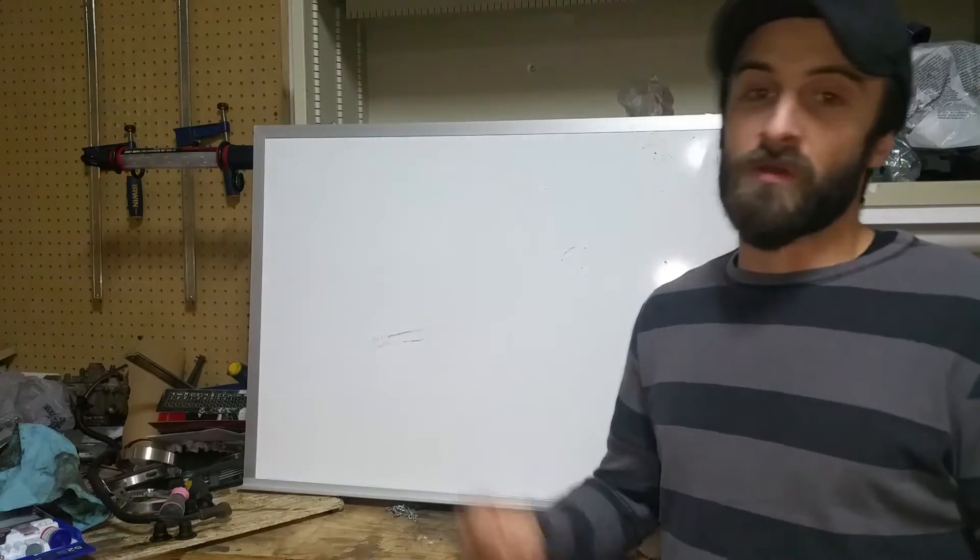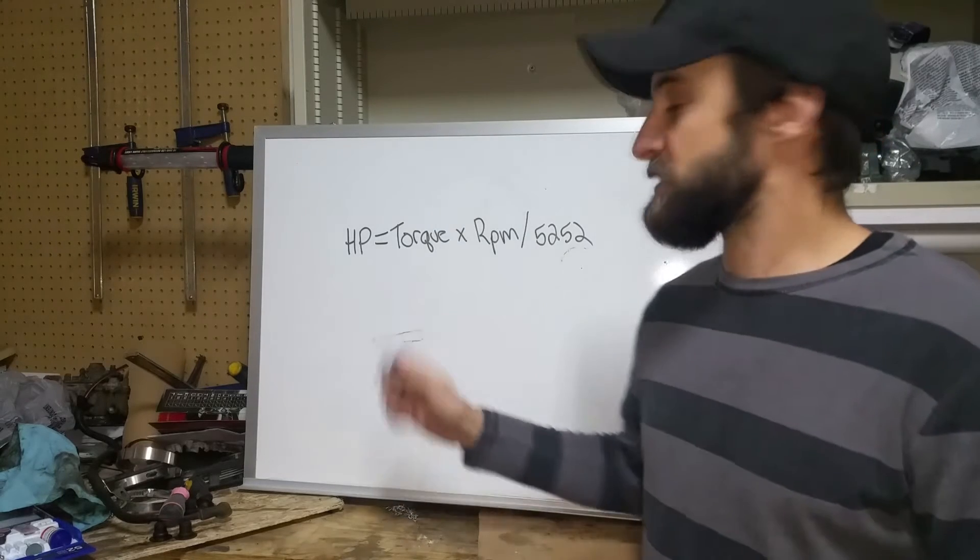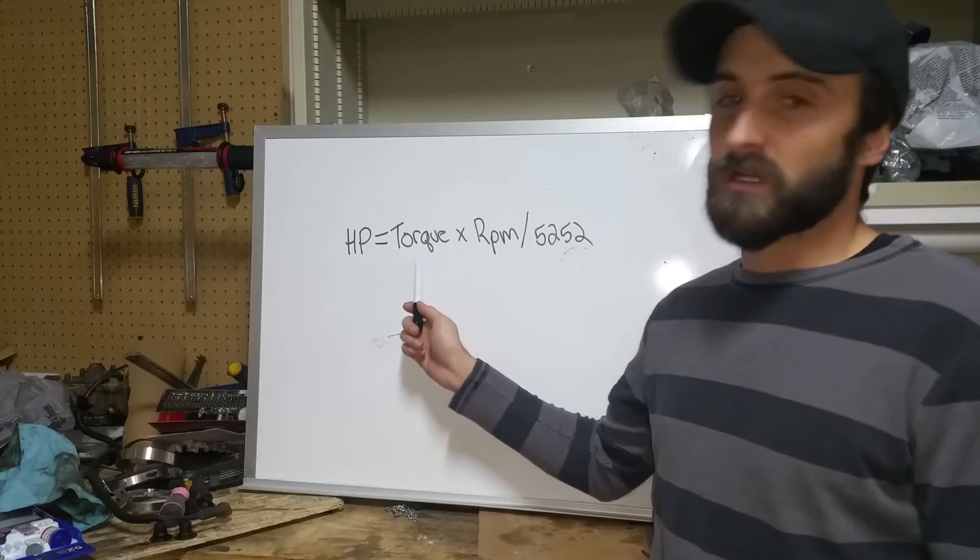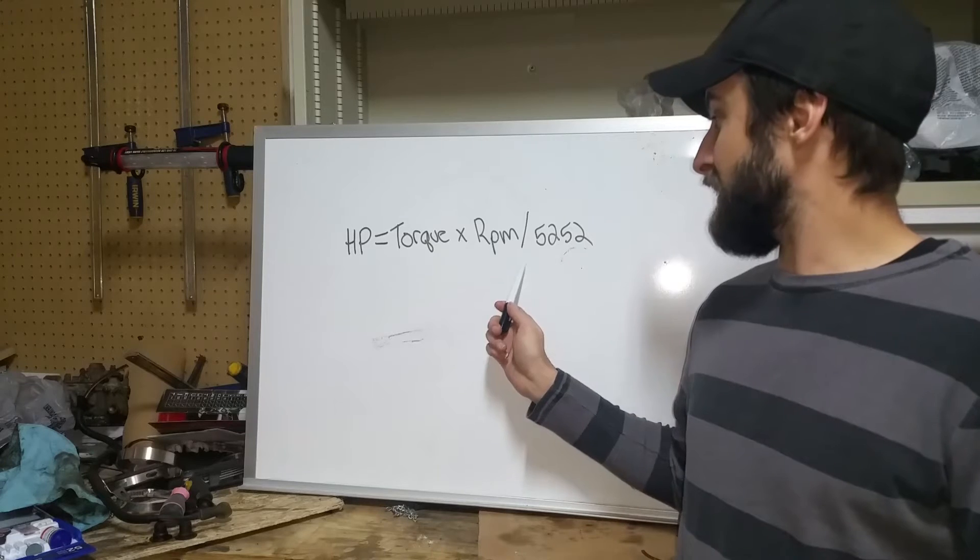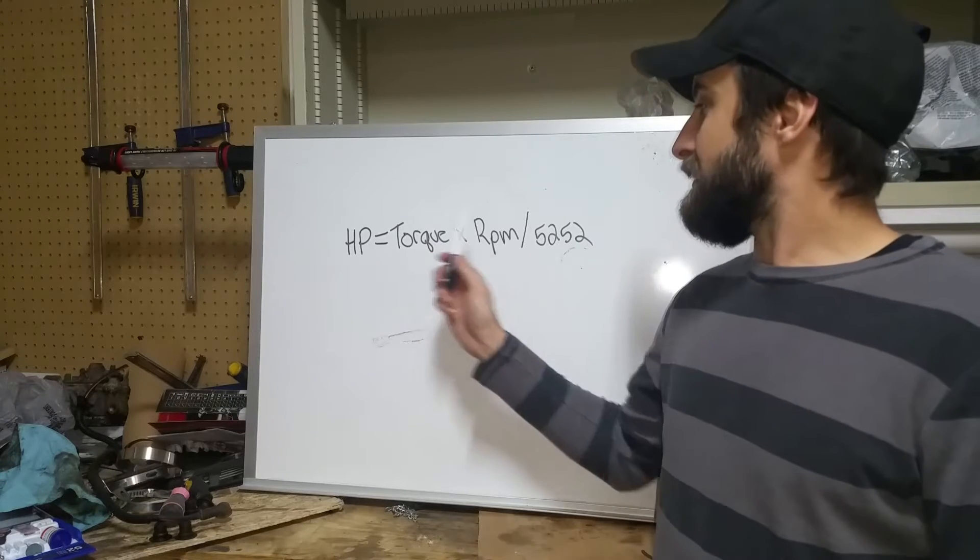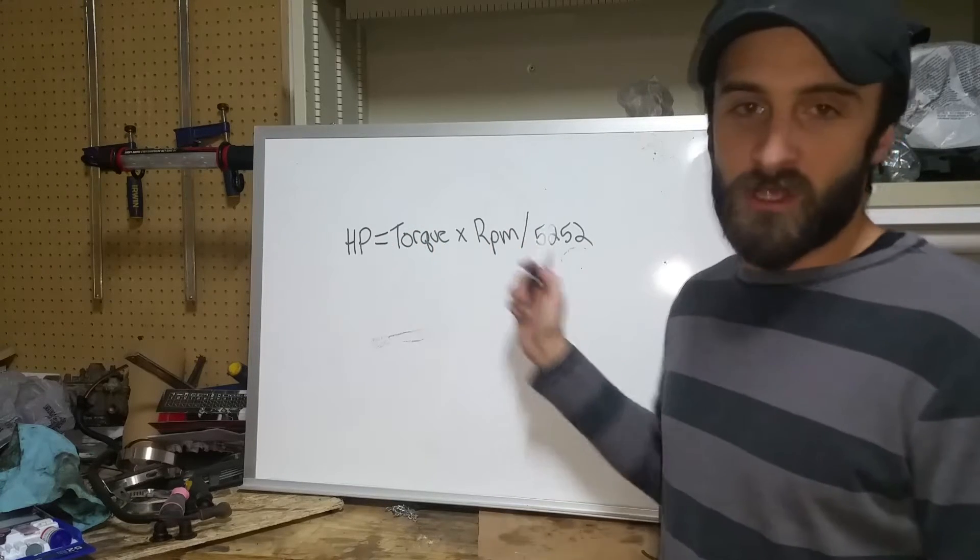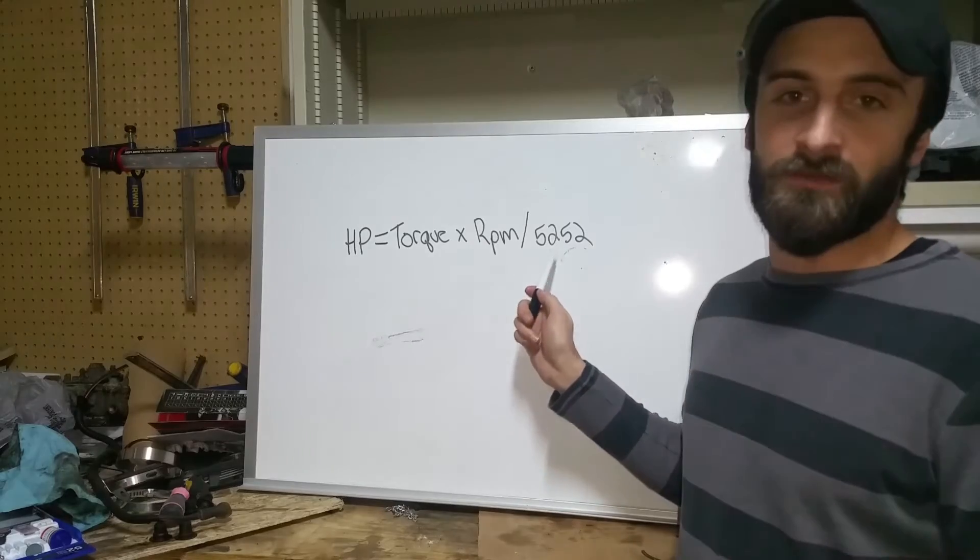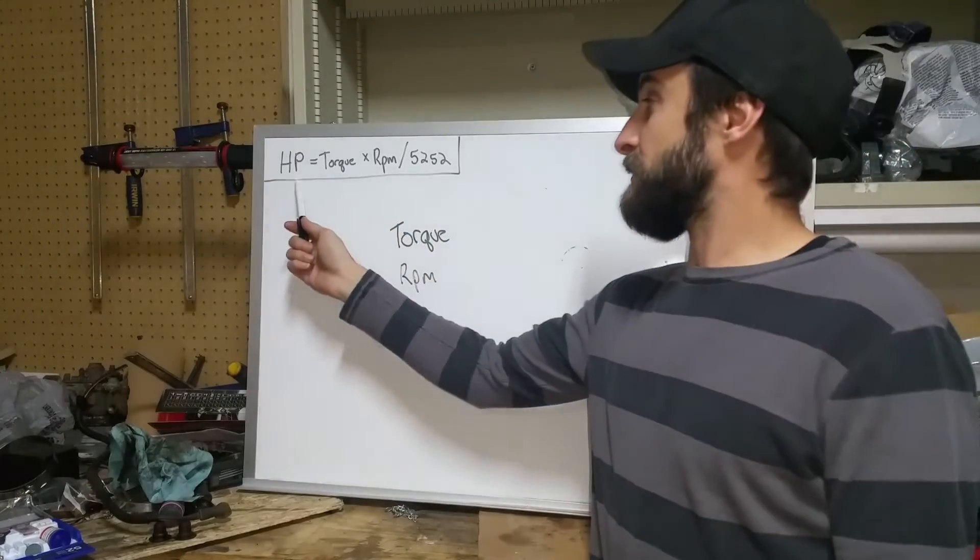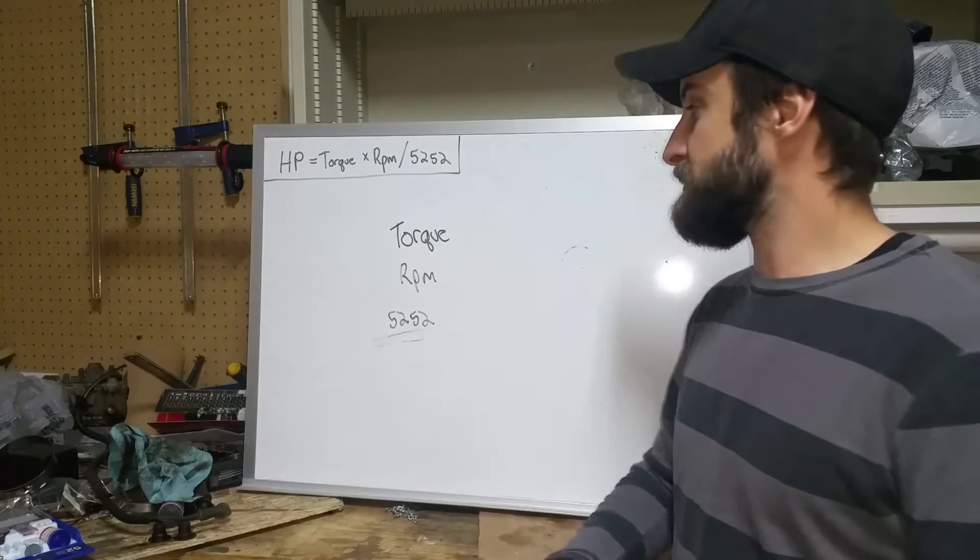So what exactly is horsepower? Horsepower is actually a calculation. So horsepower is a calculation of torque multiplied by RPM divided by 5252. Now, what does this all mean, and where do you get this number from? I moved our calculation up here just so you guys can always see it to reference it.